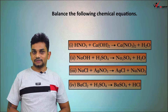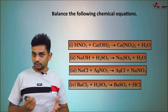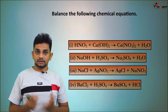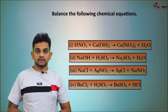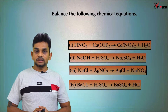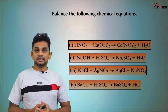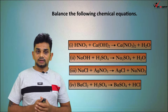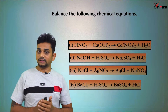Hi everyone, now we are going to discuss some important questions from the chapter chemical reactions and equations. First question: balance the following chemical equations. The equations are: HNO3 + Ca(OH)2 → Ca(NO3)2 + H2O; NaOH + H2SO4 → Na2SO4 + H2O; NaCl + AgNO3 → AgCl + NaNO3; BaCl2 + H2SO4 → BaSO4 + HCl.